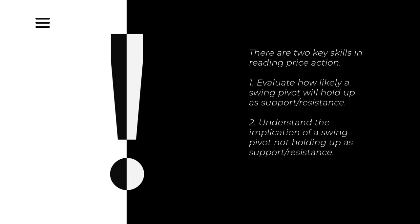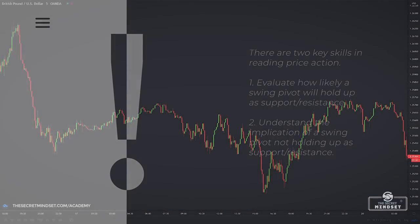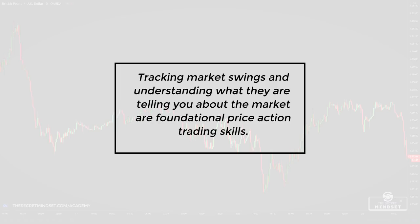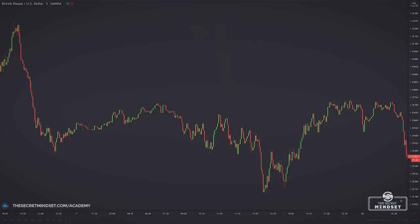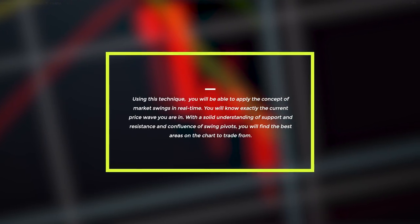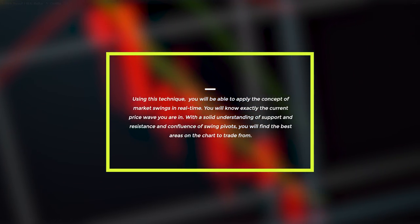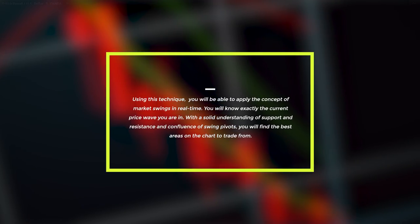In a nutshell, there are two keys in reading price action: evaluate how likely a swing pivot will hold up as a support or resistance, and understand the implication of a swing point not holding up as support or resistance. This might seem basic, but it is one of the most important concepts in trading. Tracking market swings and understanding what they are telling you about the market are foundational price action trading skills. Many traders follow market swings in the wrong manner and find them useful only in hindsight, unable to apply the concept in real time. With this simple approach, you will know exactly the current price wave you are in, and with a solid understanding of support and resistance and confluence of swing points, you will find the best areas on a chart to trade from.